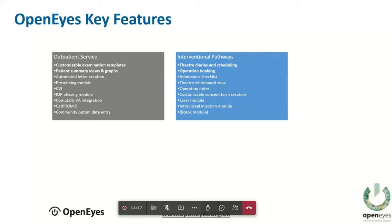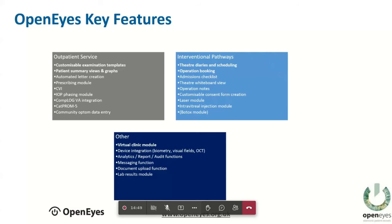For interventional pathways, all surgical bookings, theatre diaries, and scheduling are done via OpenEyes. The admin team schedule operations through the OpenEyes partial booking system. When performing surgery, you open a whiteboard view showing all lens choices and the surgical plan. Op notes and consent forms are all done through there. Because everything is on one system you have good audit data, and it works well for virtual clinics where lists of patients can have investigations collected and stored for later review, all fully audited.